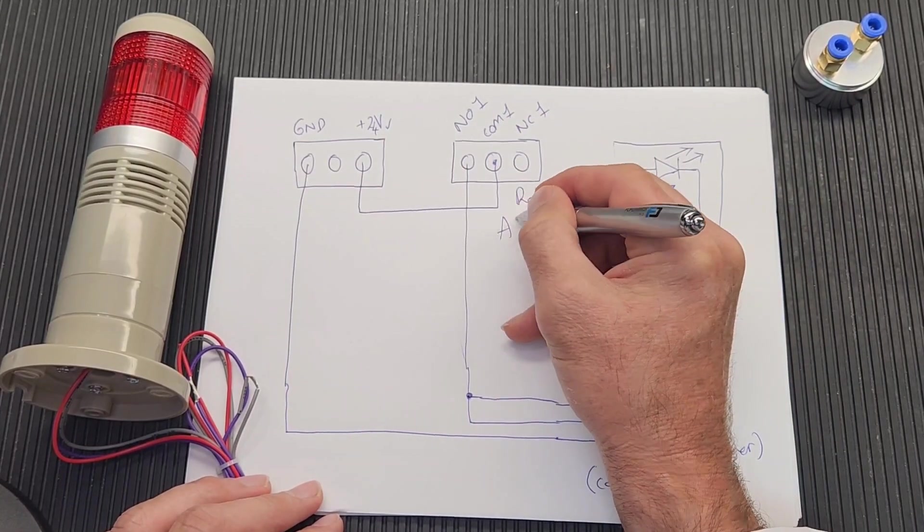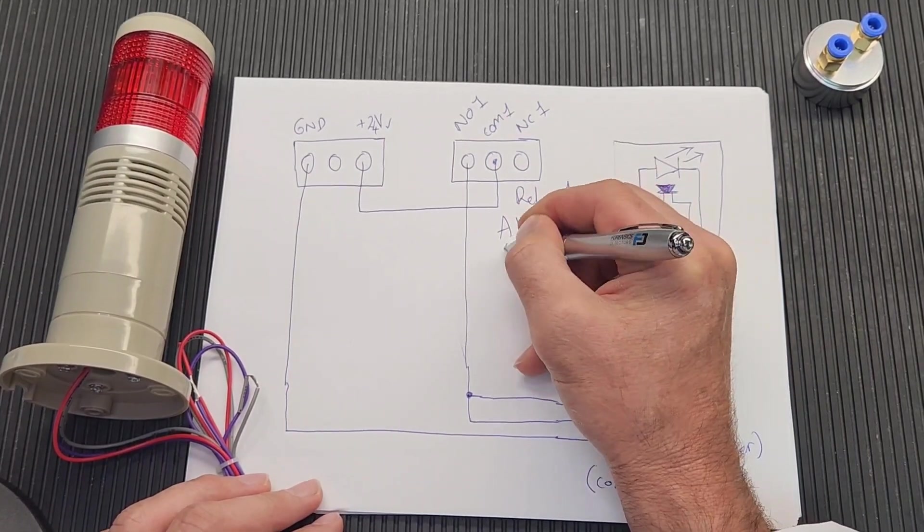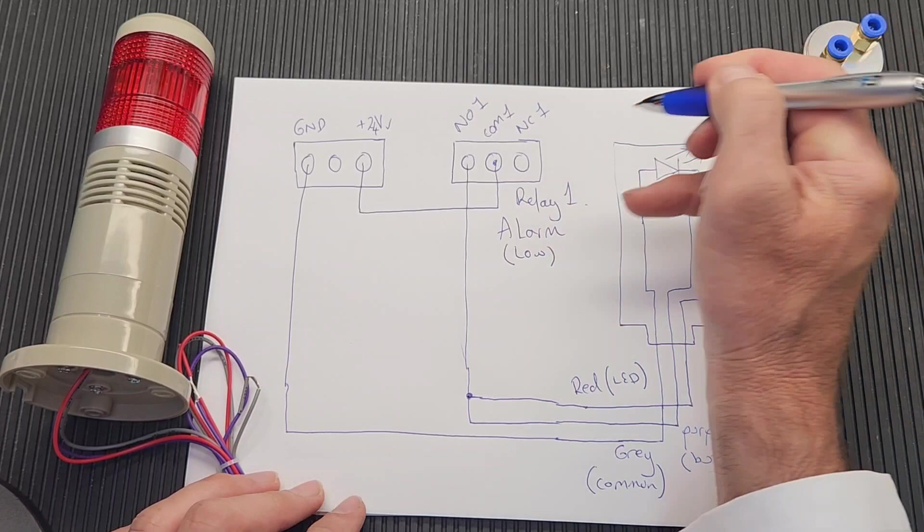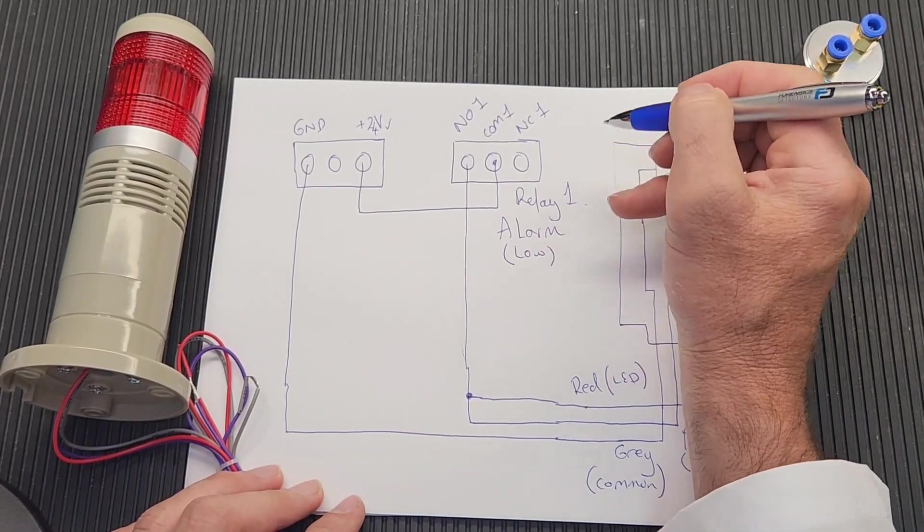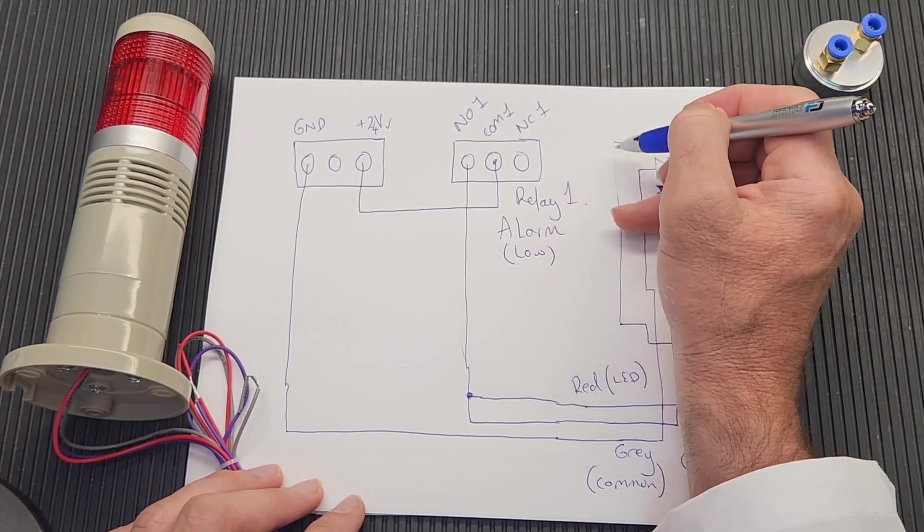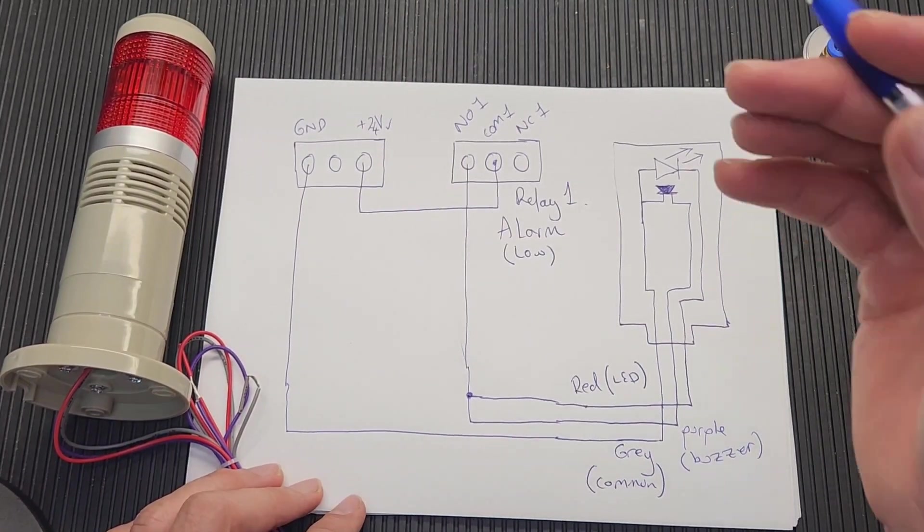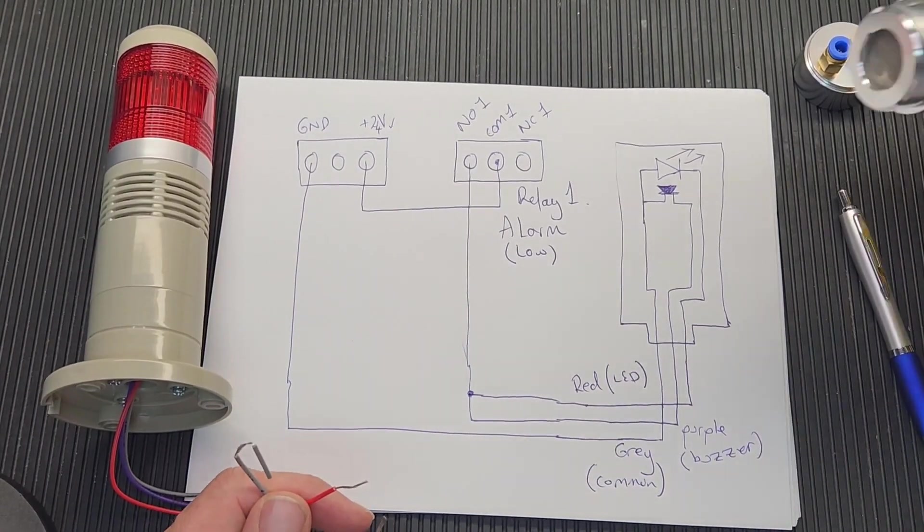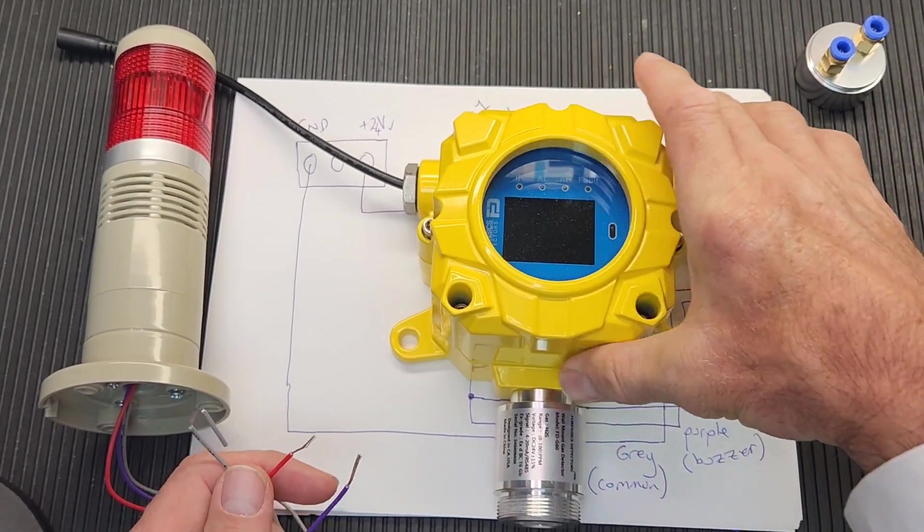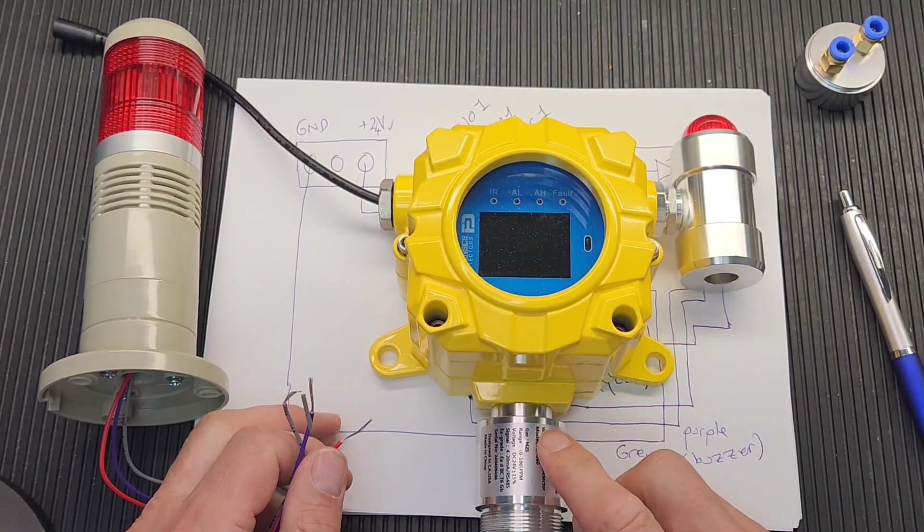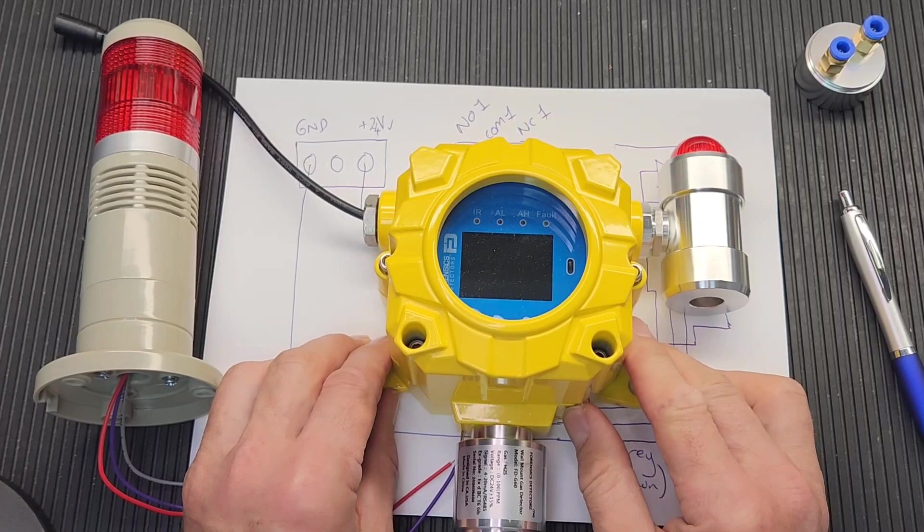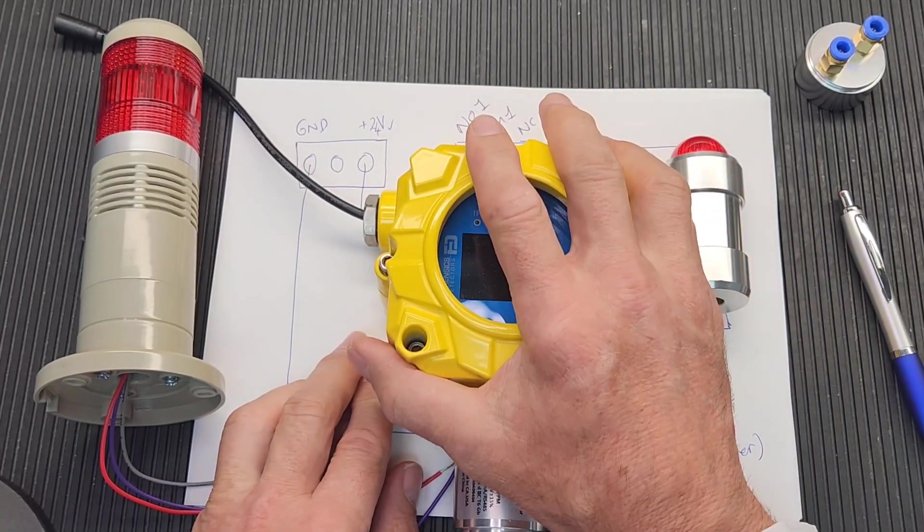We're talking about relay number one, which is corresponding to our low alarm. We have another block on the PCB, which is our relay 2, which corresponds to the high alarm. You could extend that further if you want to. Let's bring back our FD-60. This is our H2S version.